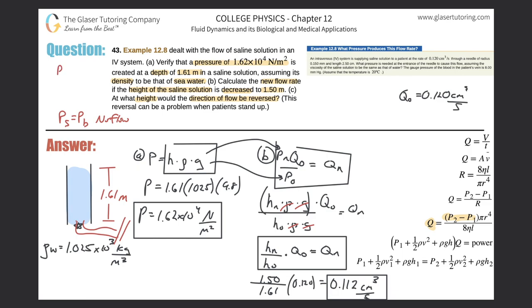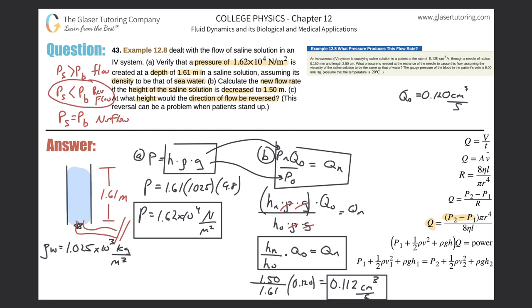If the pressure of the saline solution is greater than the pressure of the blood, then we get flow — meaning flow from the saline solution into the vein. But if the pressure of the saline solution is less than the pressure of the blood, then we have reverse flow — blood is going to be coming out of the patient. So flow will be reversed when the pressure of the saline solution is less than the pressure of the blood.